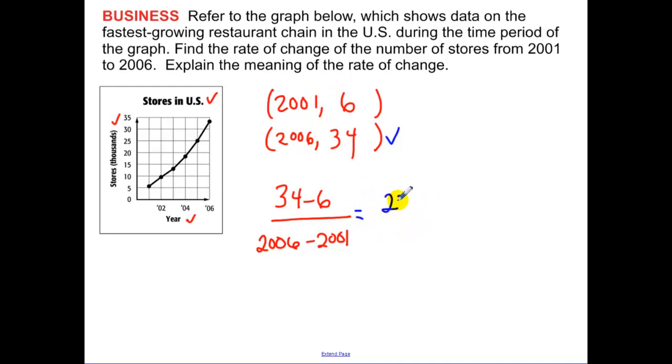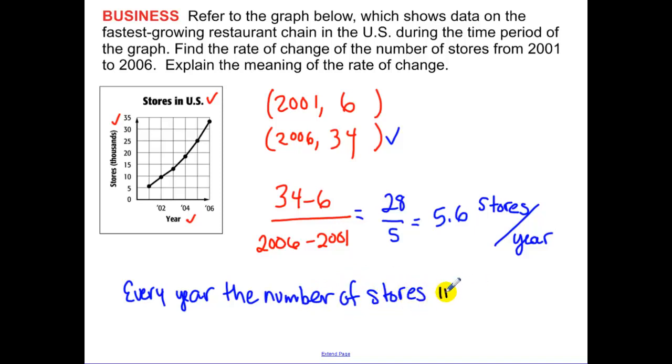So now when I simplify that, I get 28 over 5. Or because this is in reference to a word problem, let's write that as a decimal. 5.6 stores per year. So explain the meaning. Every year, the number of stores increase, telling me the slope is positive, by 5.6.